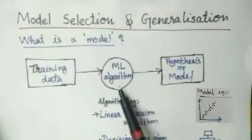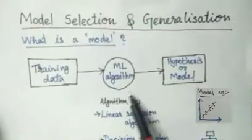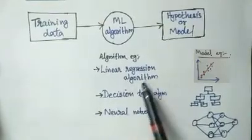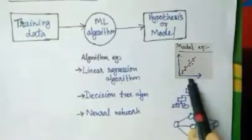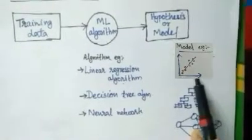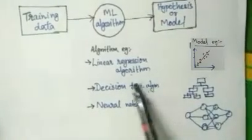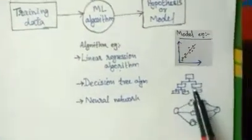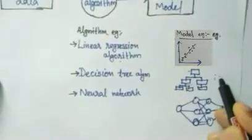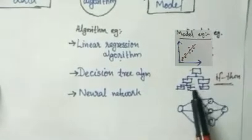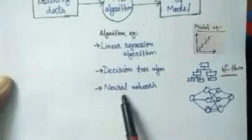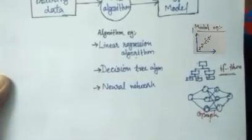In the case of a learning algorithm, examples of machine learning algorithms include the linear regression algorithm. If we use this algorithm with given training data, we get a linear line as a model. In the case of a decision tree algorithm, the resulting model has a graph structure.